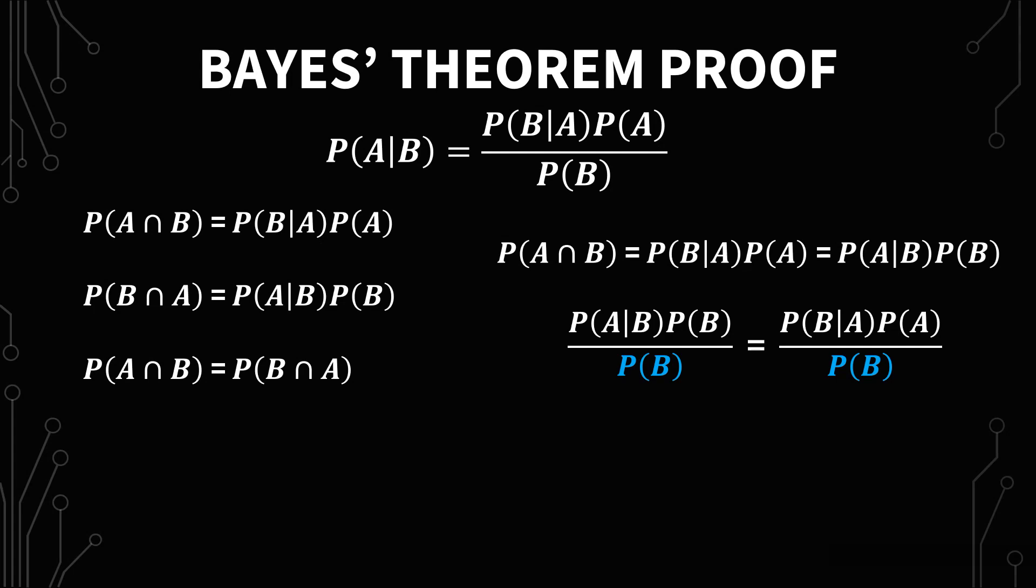What happens next is the probability of B over the probability of B on the left side equals 1. After that reduction, you have Bayes' theorem.